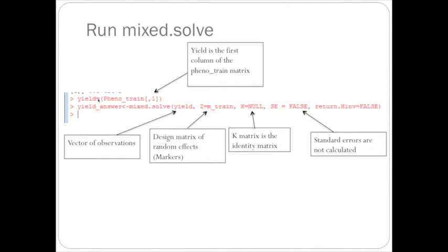And then I set z equal to the marker matrix. And k is equal to the identity matrix, so k equals null. And then I have the standard errors and the return hind as false.